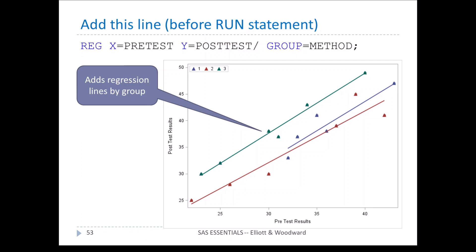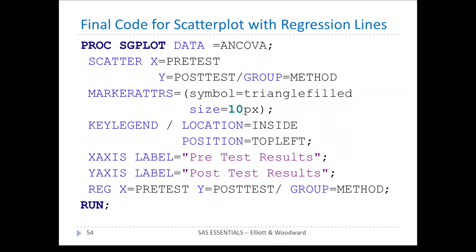Open up the program file sgplot3.sas. We have PROC SGPLOT using data called ANCOVA, with a scatter plot of X equal pretest and Y equal posttest — pre- and post-test scores. SGPLOT automatically creates the Y-axis label at the 90-degree position. Adding group equal method assigns colors: red, blue, and green for the three groups. We can change the markers using markattrs symbol equal triangle_filled with size of 10 pixels for more pronounced symbols. Adding a key legend inside top left and axis labels further customizes the graph. We can also add a reg statement — reg x equal pretest, y equal posttest, slash group equal method — which plots three separate regression lines, one per group.